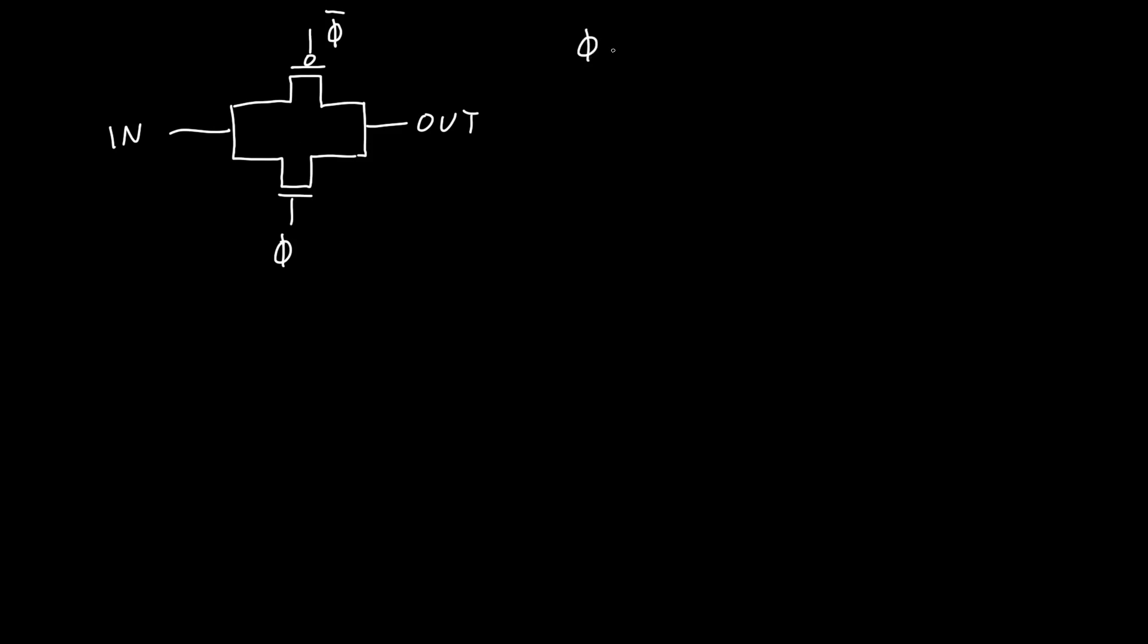And that's because we want the PMOS and the NMOS to be off and on at the same time. So in this case, when phi, let's do this in blue, when phi is equal to zero, then the NMOS is off. So the NMOS is off.